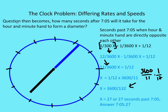The question was: how many seconds after 7:05 will it take for the hour hand and minute hand to form the diameter? The answer is 27 seconds past 7:05, so the time is 7:05 and 27 seconds — the moment when the minute hand and the hour hand are in a straight line and form a diameter through the clock. That's it for the clock problem. Hopefully you get it. Thanks for joining us. Please join us for another edition of OttenMath sometime soon.